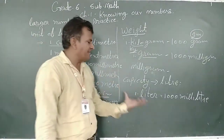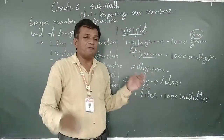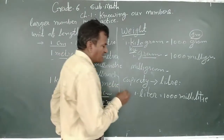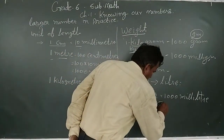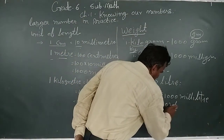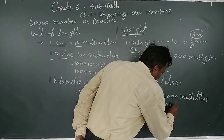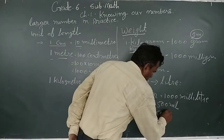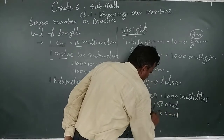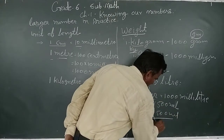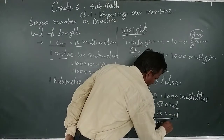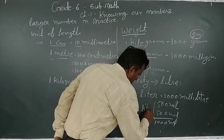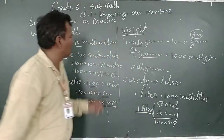In daily life, we know that if we purchase a pouch of milk, it contains 500 milliliters — the label shows 500 ml. If we purchase two pouches, then we get 1000 ml, which is known as one liter. Understand?